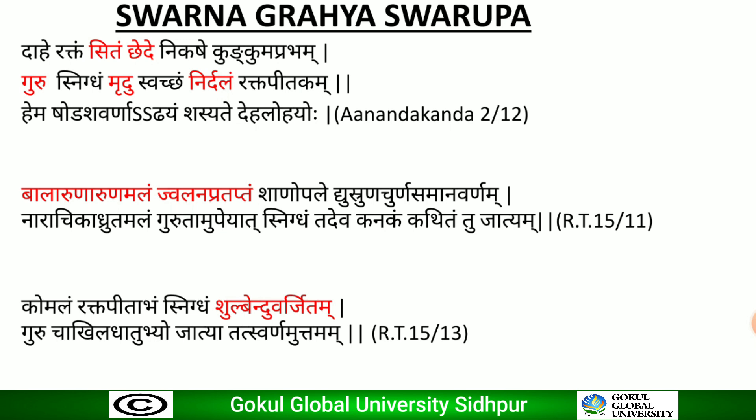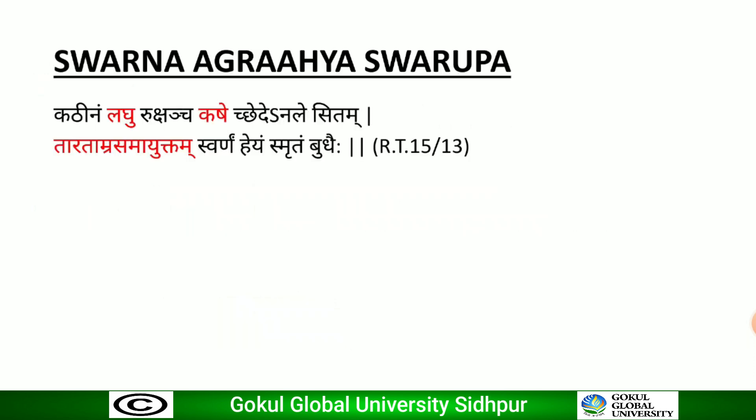The Agrahya Swarna (rejected gold) is gold which does not exhibit malleability and ductility, is hard, lighter in weight, does not leave any lines when rubbed over a rubbing stone, and exhibits a white surface when cut. Such a sample is considered unfit for pharmaceutical or therapeutic purposes, and it is usually adulterated with silver and copper.